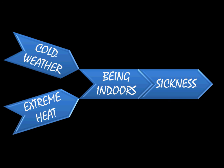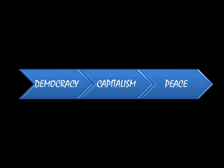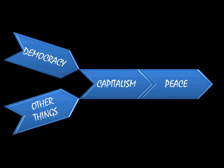This is where it becomes important when talking about democratic peace theory and the problems with correlation not implying causation. We know there's a correlation between democracy and peace, and people claim democracy causes peace. But that might just be an artifact of some other causal relationship. For example, democracy could cause capitalism and capitalism could cause peace. If you think democracy is causing peace, that would tell you to promote democracy around the world, when perhaps other things cause capitalism — and if capitalism is what's causing the peace, then promoting both democracy and those other things would be really useful.